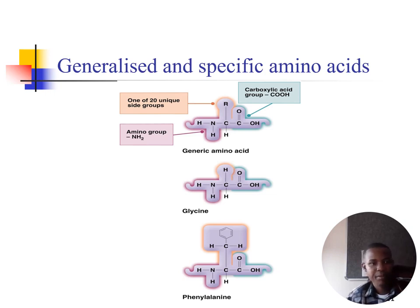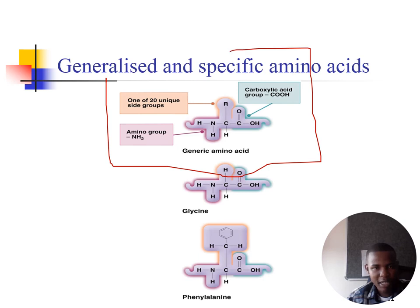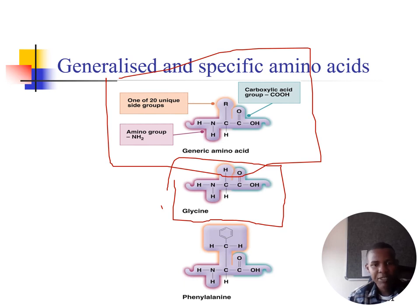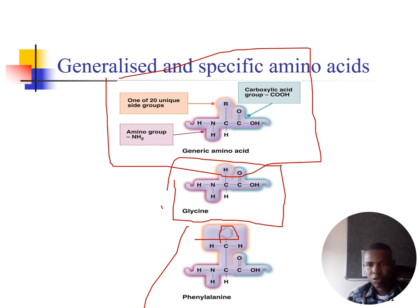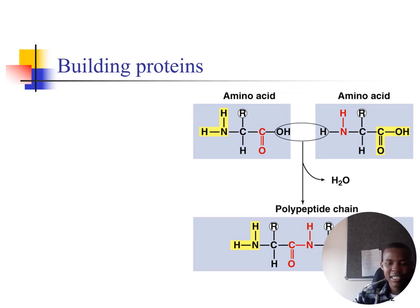Let's look at some specific amino acids. A generic amino acid has one of 20 unique side groups, an amino group, a central carbon, and a carboxyl group. Glycine is the simplest amino acid — you need to be able to draw glycine. You also need to be able to draw alanine and phenylalanine, which contains a phenyl ring, which is why we call it phenylalanine.